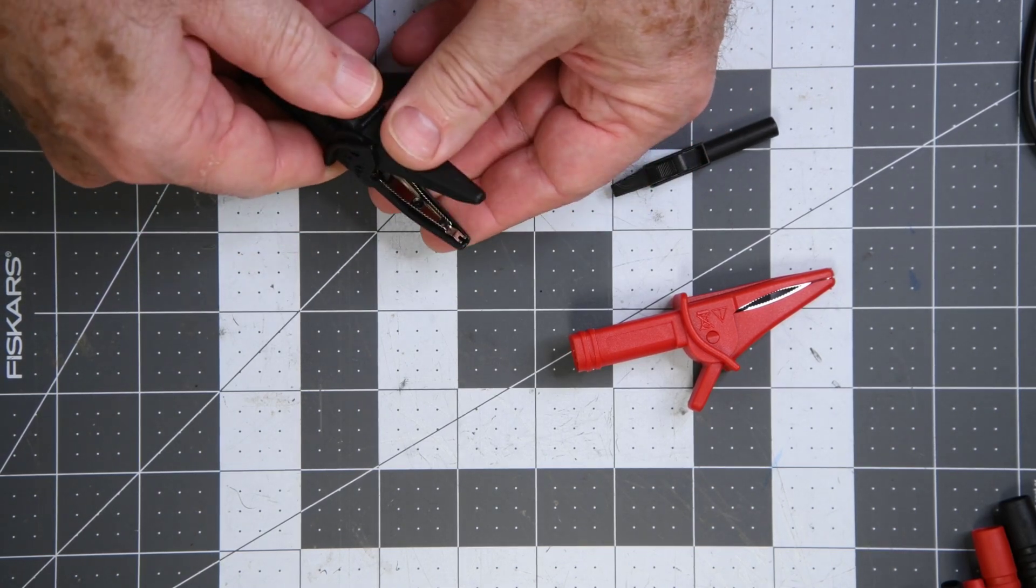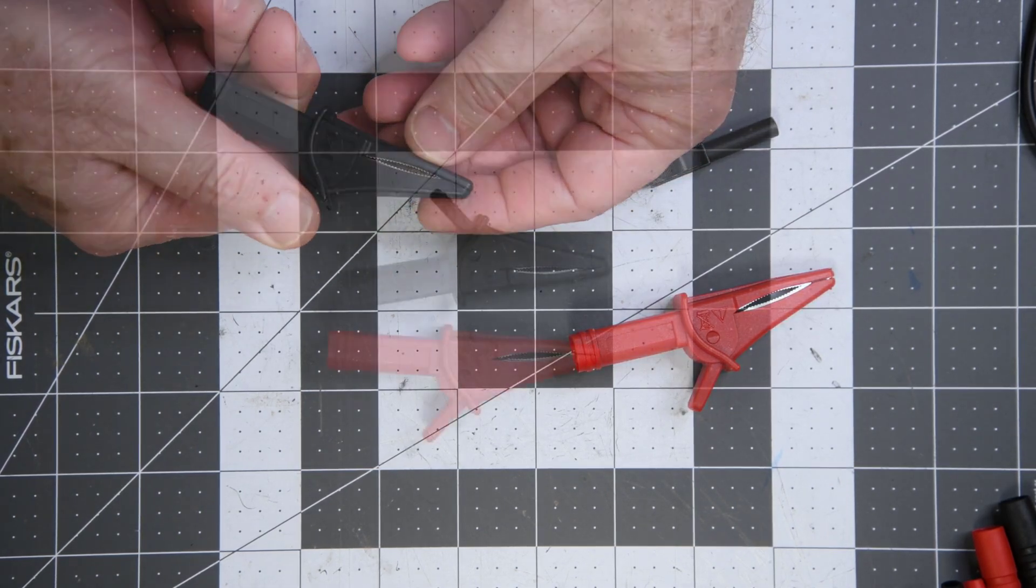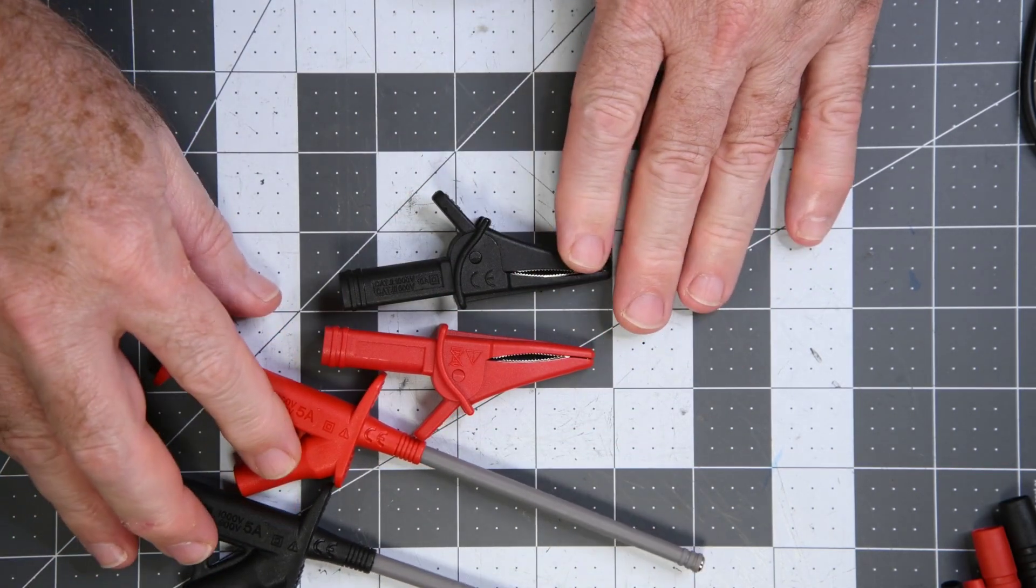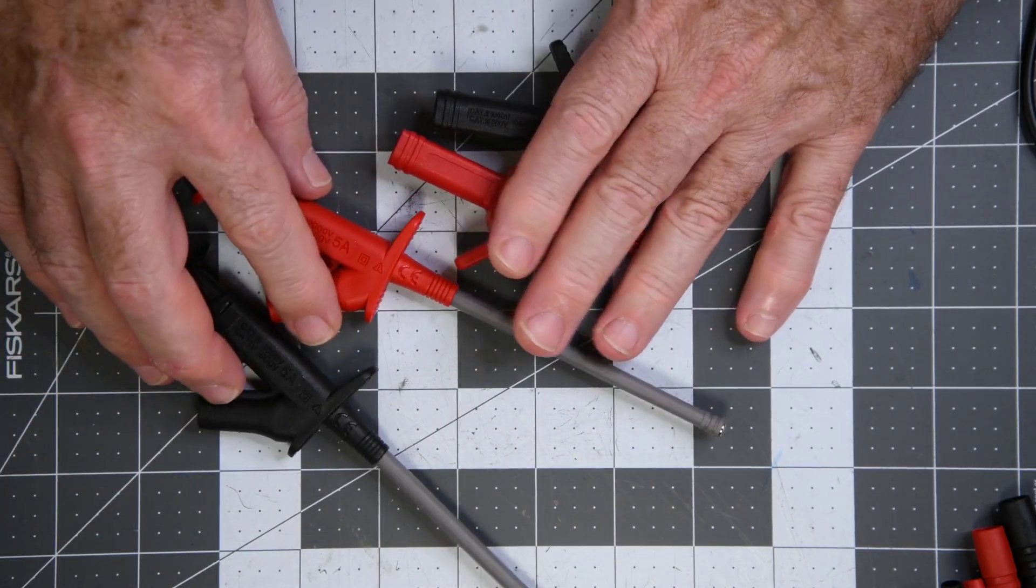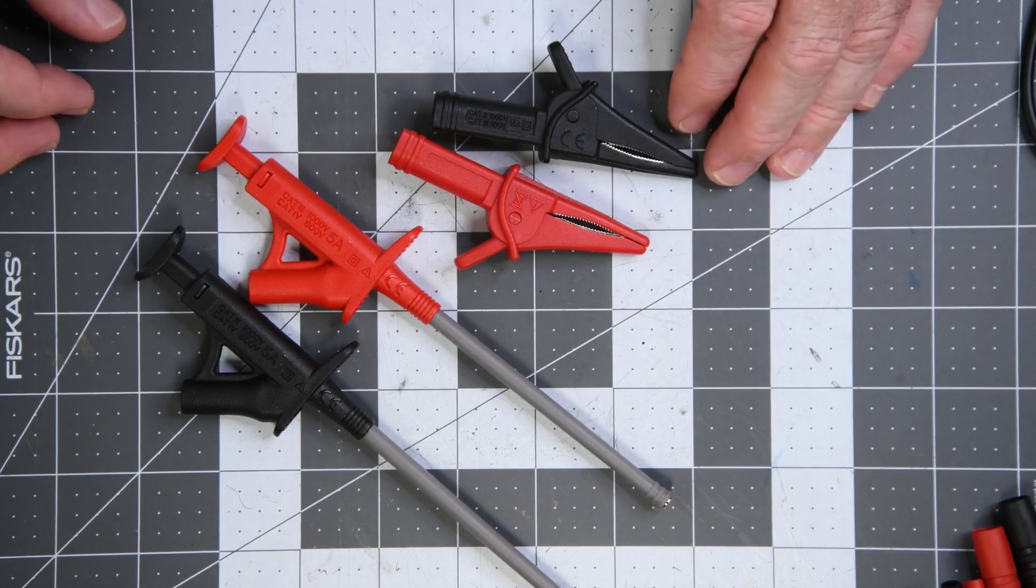The metal in the jaws looks a bit on the thin side. But again, this is not a premium priced lead kit. Definitely think the pair of large alligator clips is worth $10. Say $10 for the large alligator clips and $15 for the flexible grabbers. The kit is already worth its cost. And there's still more proby and grabby stuff to look at.